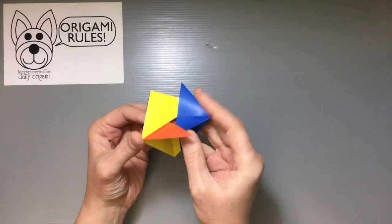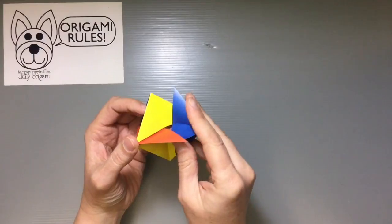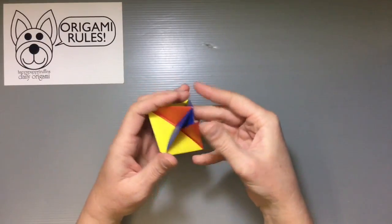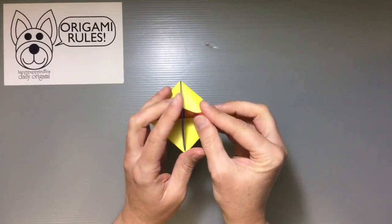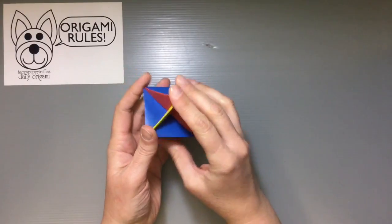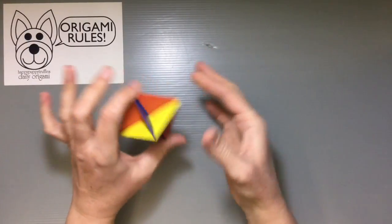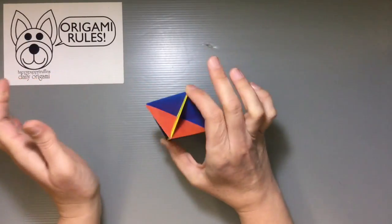So kind of get that all started. Shimmy things around. Getting those little legs to go where they need to. This one's kind of crooked. Shimmy it around. And then if you put a little pressure on each of your points. You should have a nice completed top.